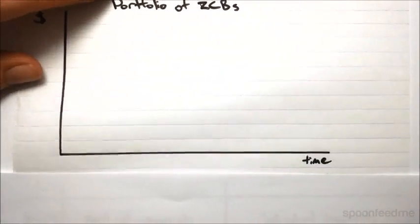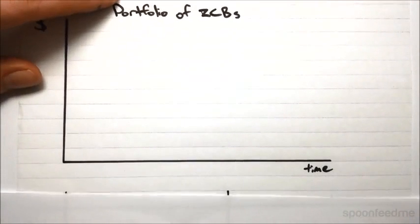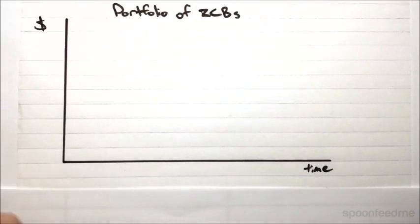So on this graph here, I'm going to show the cash flows of a potential portfolio of zero-coupon bonds. So remember a zero-coupon bond, you pay for it up front and then after a certain given time, at the maturity, you'll receive a single payment. So it's a very simple security.